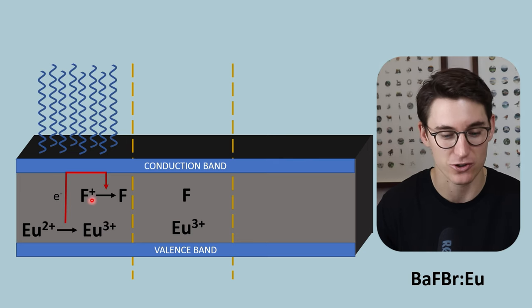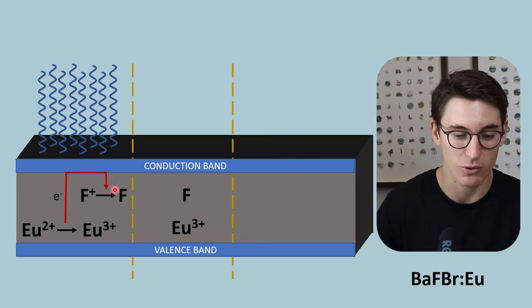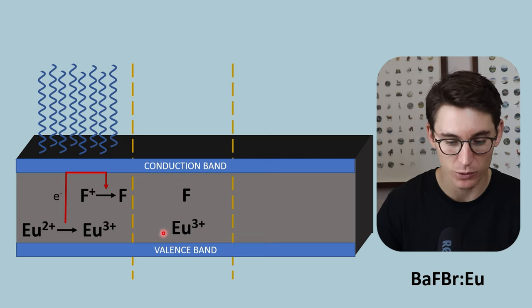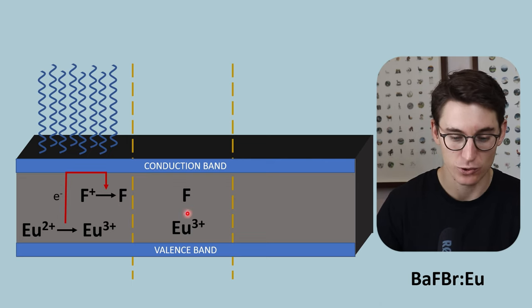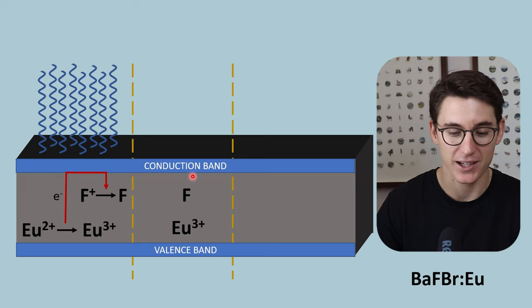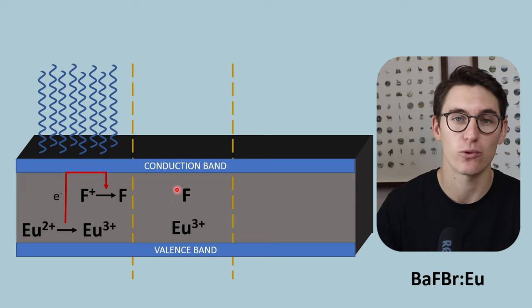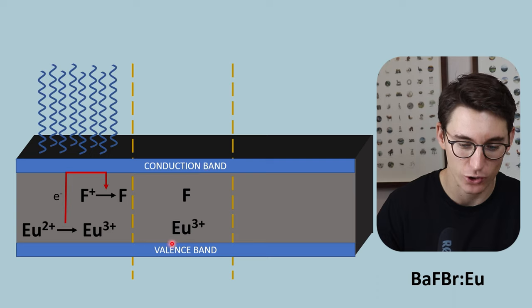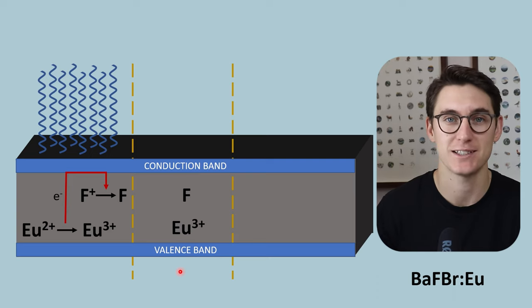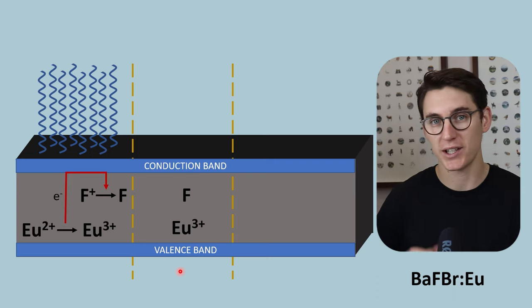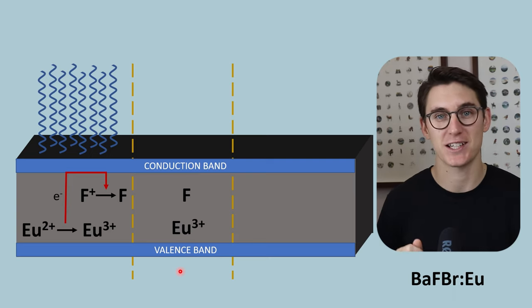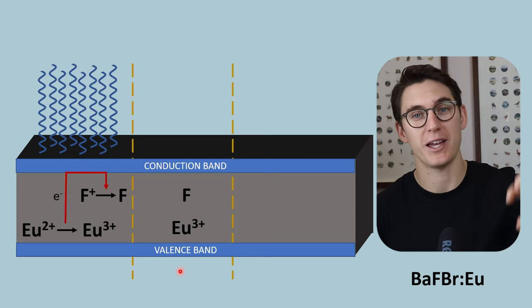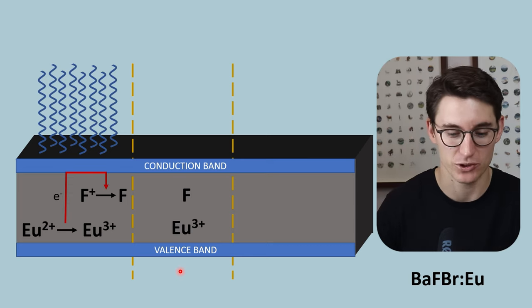Reduction is gain of an electron, and this forms a metastable fluoride atom. What we now have is europium 3+ and a stable, uncharged fluoride atom — and this is what is known as our latent image. At this stage we can carry around the cassette, and only when we process this image will we be able to see the digital image on a computer.